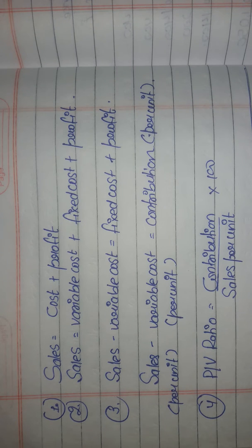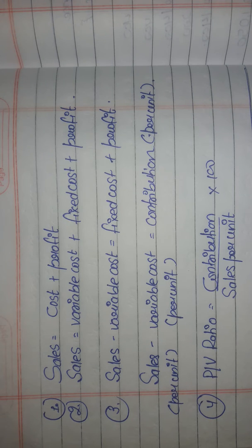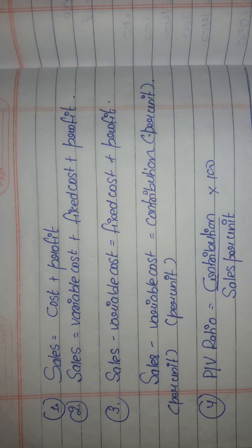Any excess of contribution over fixed cost will be your profit. Break-even point depicts the point of production at which neither profit nor loss results. Margin of safety is the revenue earned after the company pays all its fixed and variable costs related to the production of goods.